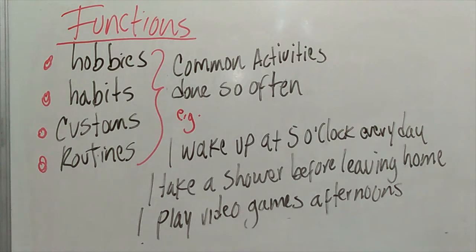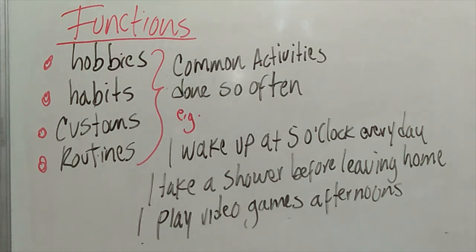Esto ya es un poquito más complicado — ya no es como las lecciones anteriores de vocabulario: tipos de clima, family members, números. Esto ya es un tiempo verbal de los más importantes. Cuando veamos el presente, el pasado y el futuro, va a ser más complicado. Vamos a borrar esto y poner más ejercicios.